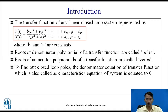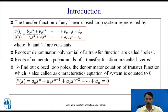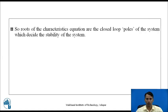To find out closed loop poles, the denominator equation of the transfer function — which is also called the characteristic equation of a system — should be equated to zero. So here the denominator from the above transfer function is equated to zero. The roots of the characteristic equation are the closed loop poles of the system, which decide the stability of the system.